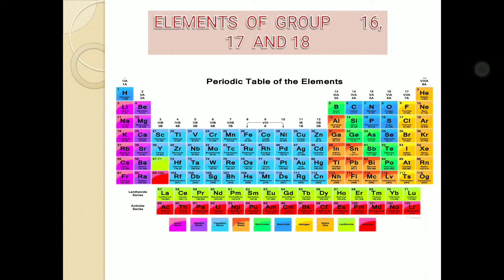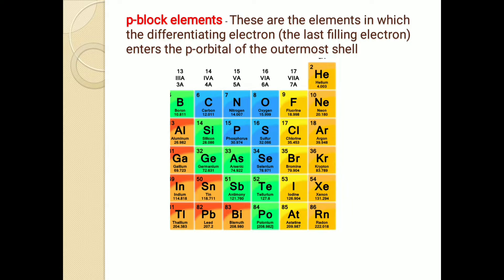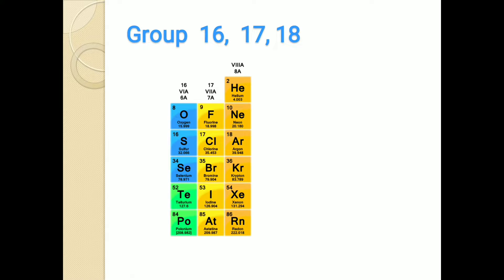The remaining three groups covered this year are the 16th, 17th, and 18th groups — all P block elements. P block elements are those in which the differentiating electron, or the last electron, is in the P orbital of the outermost shell. You can pick any element of the block, write its electronic configuration, and see that the last electron is in the P orbital. We have already covered groups 13, 14, and 15. This year we study groups 16, 17, and 18, which are located at the extreme right of the periodic table in the P block.